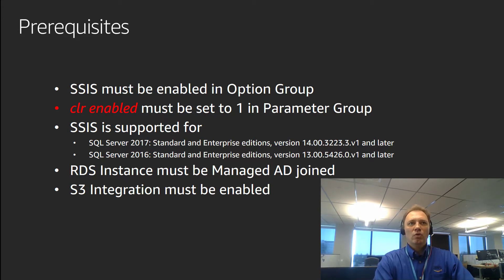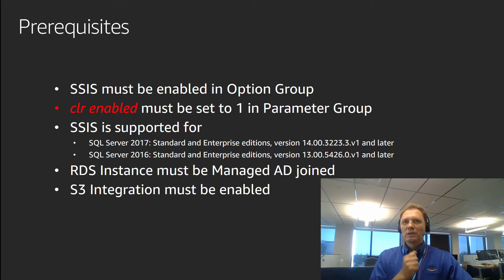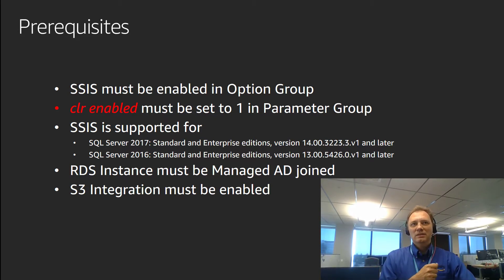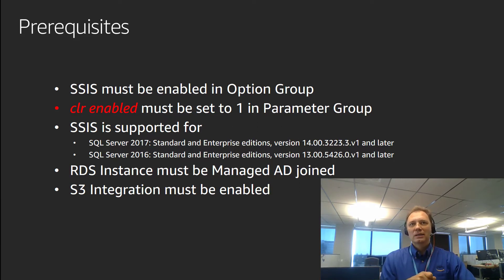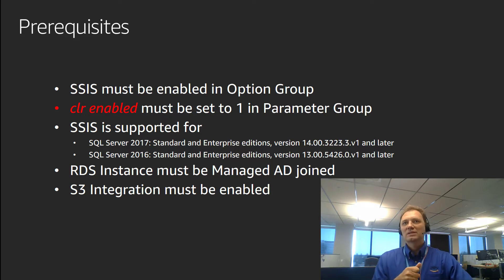The third prerequisite: SSIS is supported starting with specific build numbers. For SQL Server 2017, both standard and enterprise, it is supported starting with version 3223.3 or anything later. And for 2016, both standard and enterprise, it is supported starting with 5426.0 or later.